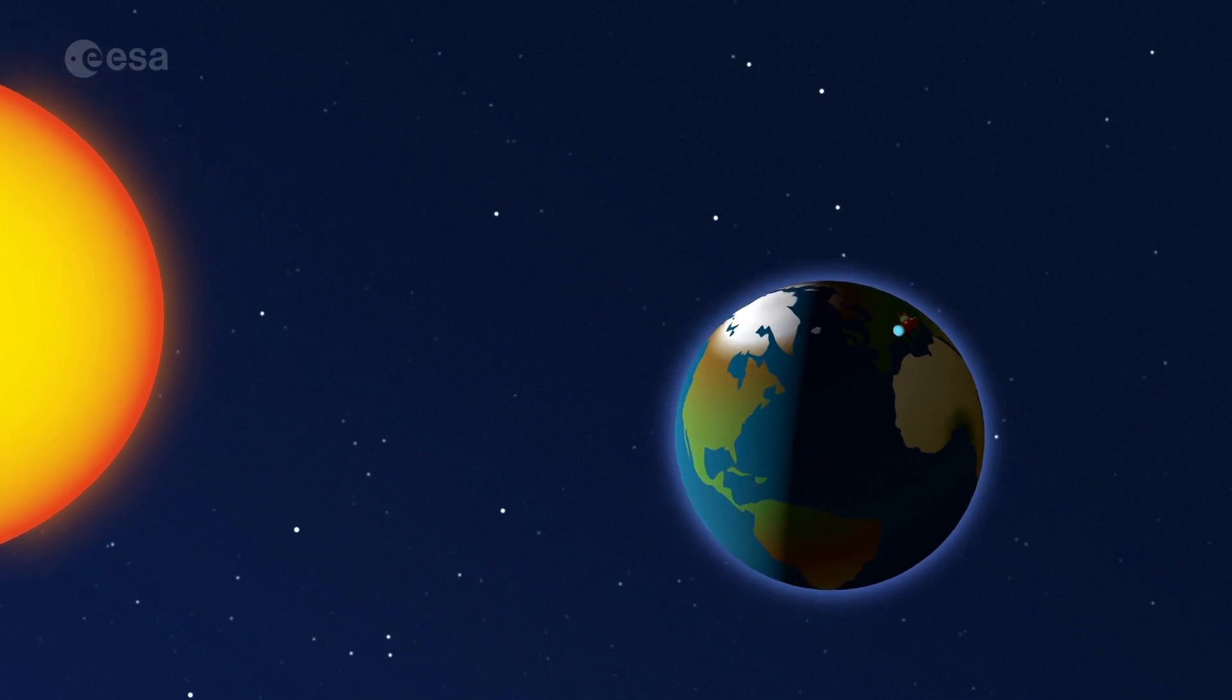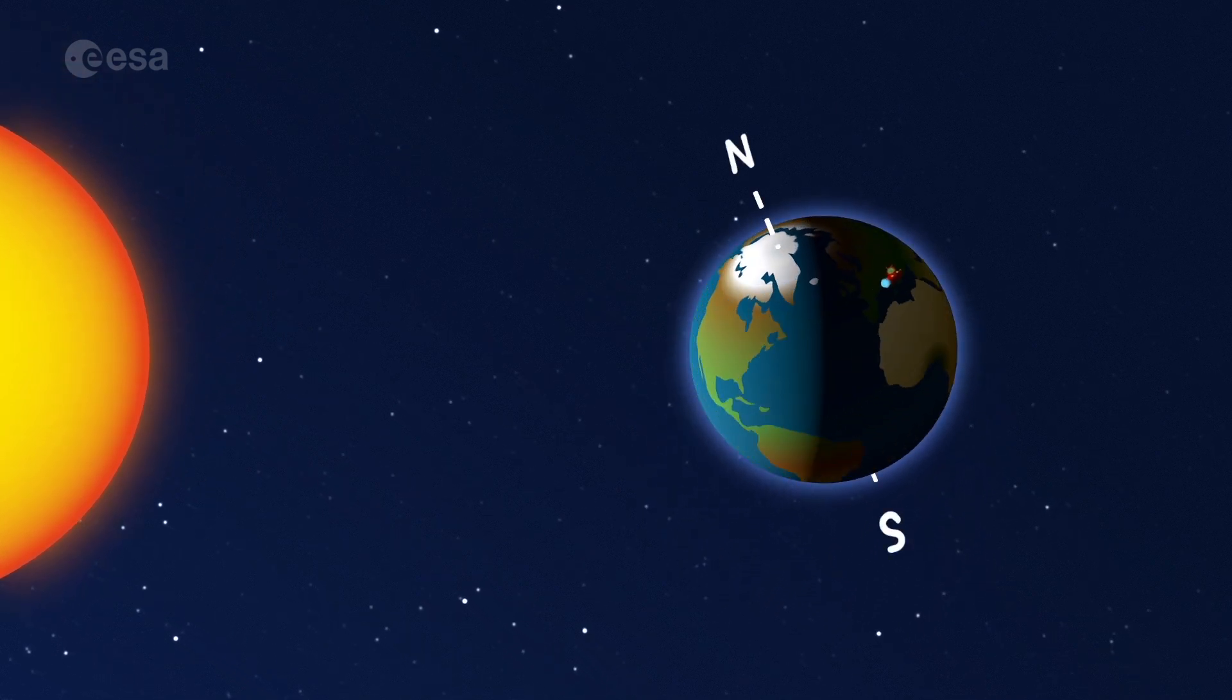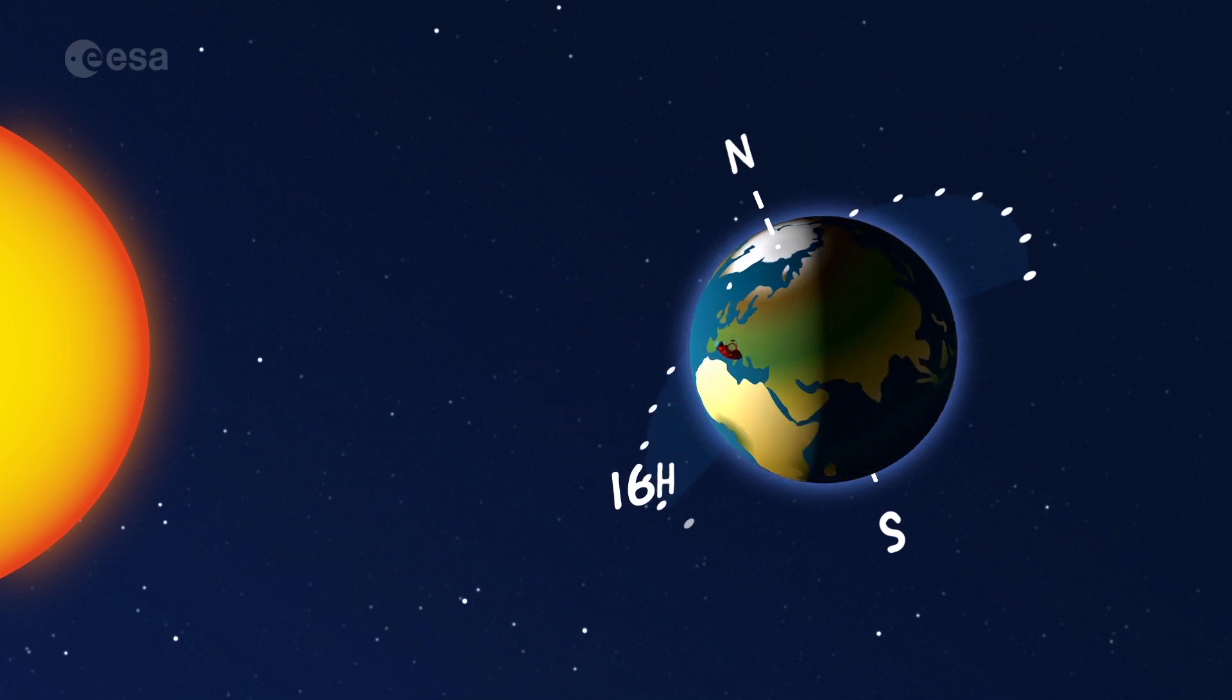Although you can't really feel it moving, it's an optical illusion. It takes 24 hours for the Earth to make a full spin. A whole day and night.